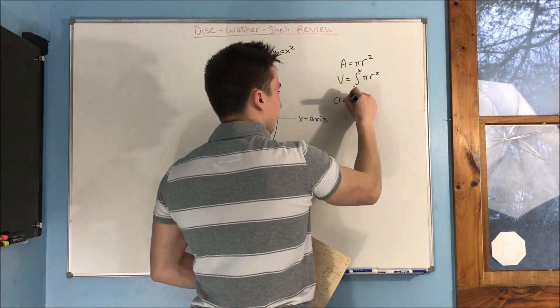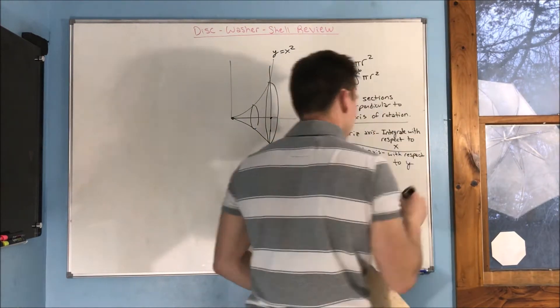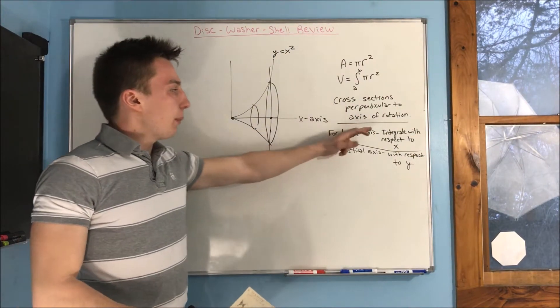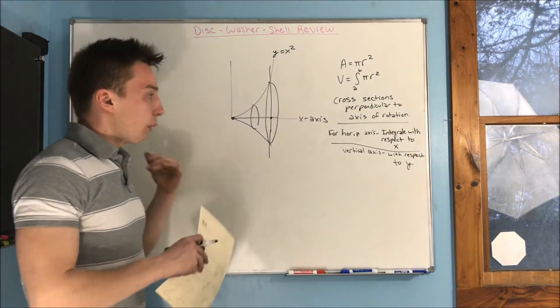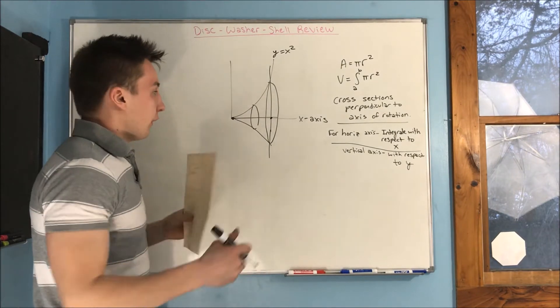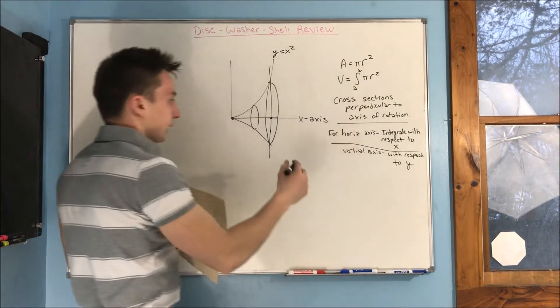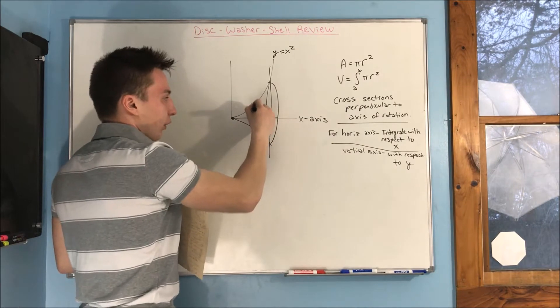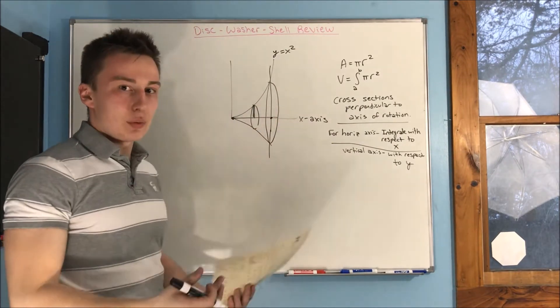Cross-sections are perpendicular to axis of rotation. That's what we're doing. So that's how you find your radius, right? Your radius is just this piece right here, and that's perpendicular to your axis of rotation.